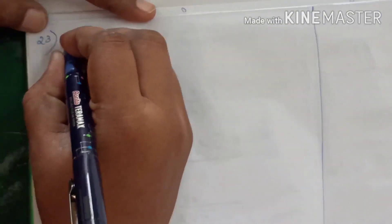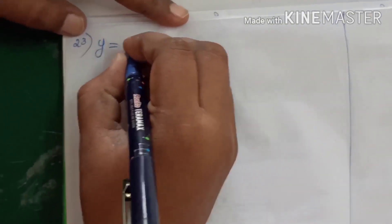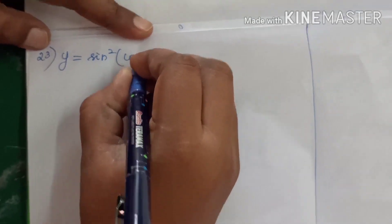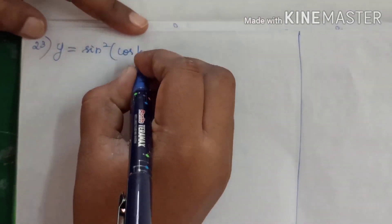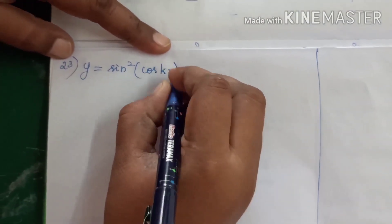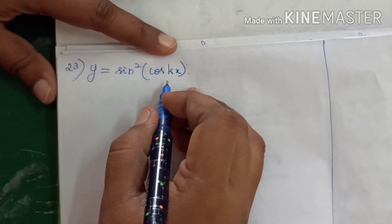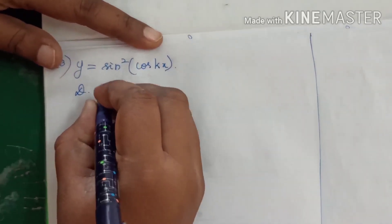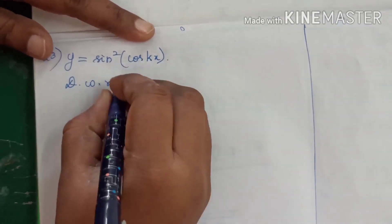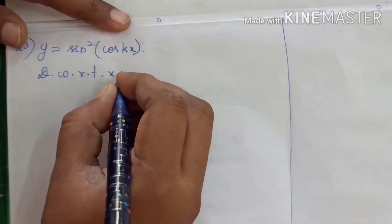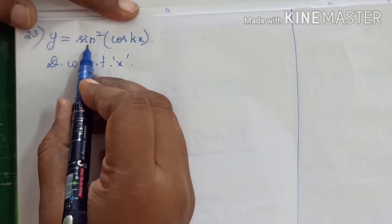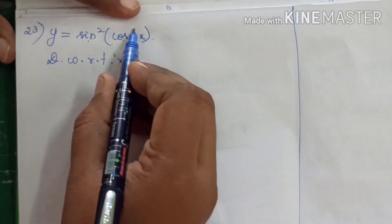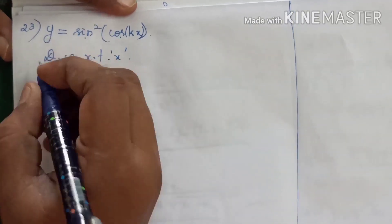The twenty-third sum: y is equal to sin squared of cos of kx. So sin squared of cos of kx — there are three terms. We need to differentiate with respect to x. The three terms are: sin squared, cos of kx, and the inner function kx.